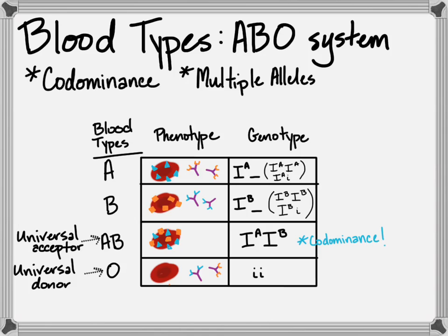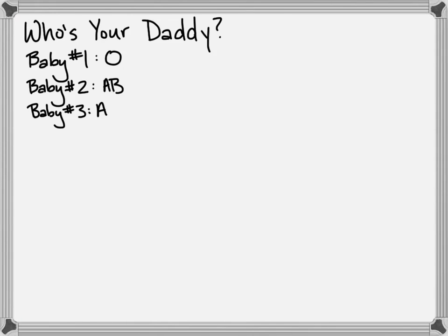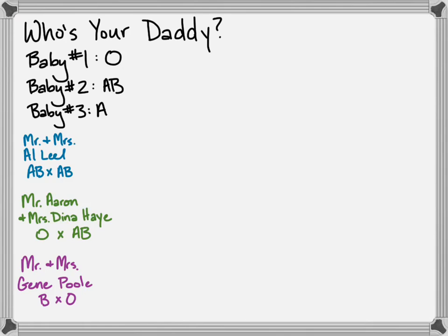Now I've got a little problem for you. The hospital messed up, and we have a whole bunch of babies and a whole bunch of parents. It is your job to use genetics and your knowledge of the ABO blood system to match them up. There are your babies, there are your parents: the Leels, the Hays, and the Pools. I would start by identifying the genotypes of the babies, work out your Punnett squares for the parents, find all the possible babies they could have, and then figure out who goes with who. So you can pause now and work that out.